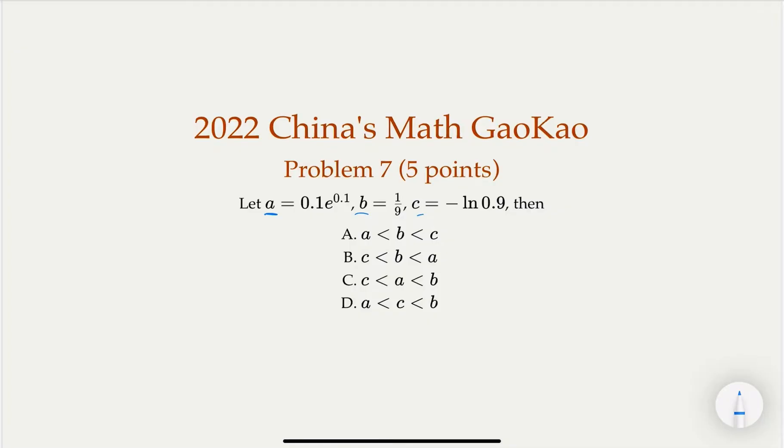and C is negative log 0.9. You know that for the logarithm, if it's smaller than 1, it's going to be negative. And here we put negative, this number is going to be a positive number. And B, of course, 1 over 9 is about 0.111 forever. So we know that easily. But for A and C, it's hard to figure out. So here we try to choose which one is correct.